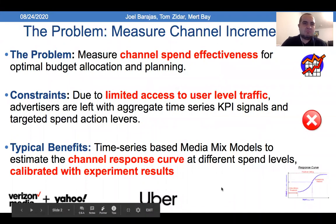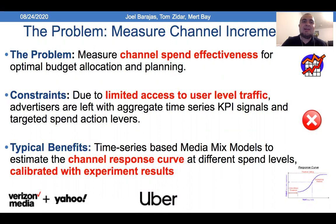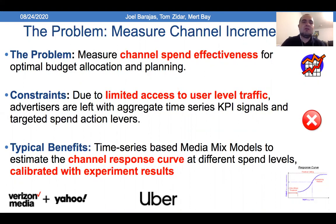The problem is purely that we want to measure the incremental channel incrementality. Although this is a typical problem in the literature, the vast majority of references assume a user randomization holdout, meaning we can hold out users randomly. From the advertiser side, we want to ensure channel spend effectiveness and use it for optimal volume allocation. However, the constraint is that we have limited access to user traffic, mostly due to business reasons and privacy concerns, so we can't randomly separate users — device IDs, specific user types, cookies — that's not possible.